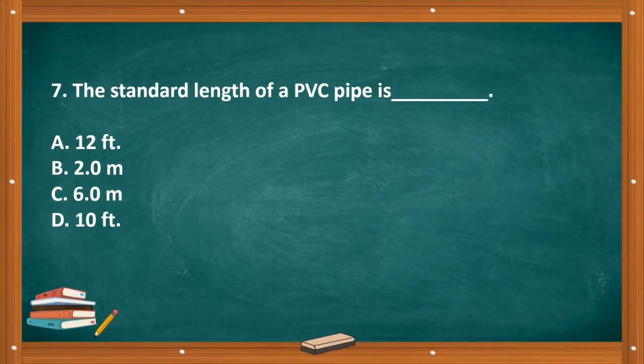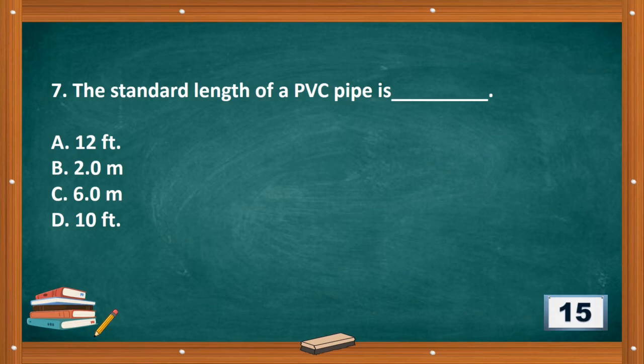Question number seven: The standard length of a PVC pipe is blank. A. 12 feet, B. 2.0 m, C. 6.0 m, D. 10 feet. The correct answer is letter D, 10 feet.